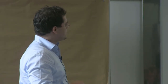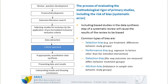The critical appraisal step is very important in the systematic review procedure because it evaluates the methodological rigor of primary studies, including a risk of bias assessment. If you include a biased study in your review, your review outcomes will be biased as well. Common types of bias to consider are: selection bias, relating to pre-treatment differences between groups; performance bias, resulting from differences in exposure factors other than the intervention; detection bias, where the way outcomes are measured differs between groups; and attrition bias, which refers to imbalanced group sizes.